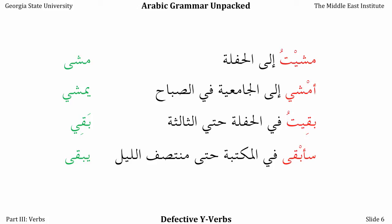We can see how these verbs differ: the first one uses alif maqsura in the past and YA in the present; the second one uses YA in the past and alif maqsura in the present. Grammar books often put these two together, which makes them very complicated. So we're going to separate them out and deal only with the second group in this lesson — the ones that use YA in the past tense, called defective YA verbs or defective Y verbs.